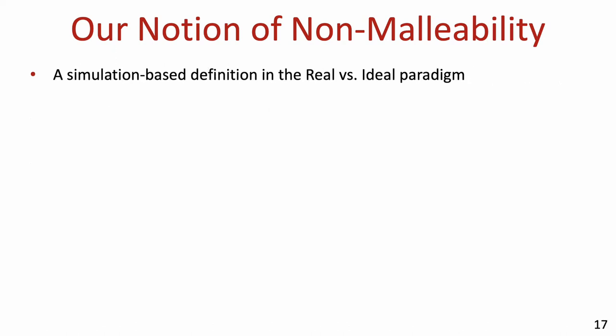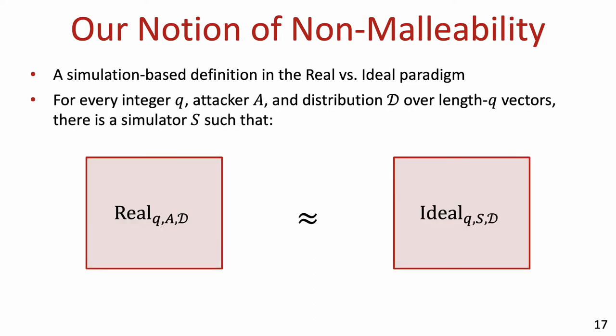In more detail, our notion of non-malleability relies on a simulation-based definition. We define two experiments — a real one and an ideal one — and we require that for any adversary A, any length q of vectors, and any distribution D over such vectors, there is a simulator S such that the output of the real experiment with adversary A is indistinguishable from the output of the ideal experiment with simulator S.